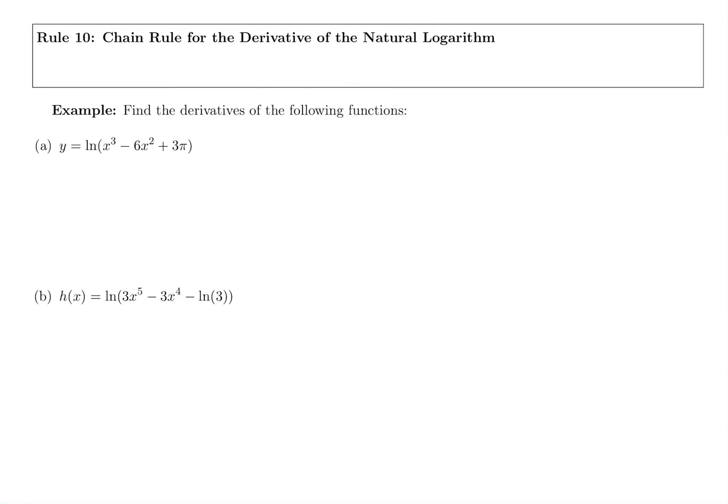Here we have the chain rule for the derivative of the natural logarithm. So we have an ln still, but inside of it is not just a regular x. It might be ln of x plus 1, or ln of 2x, something more than just an x on the inside.